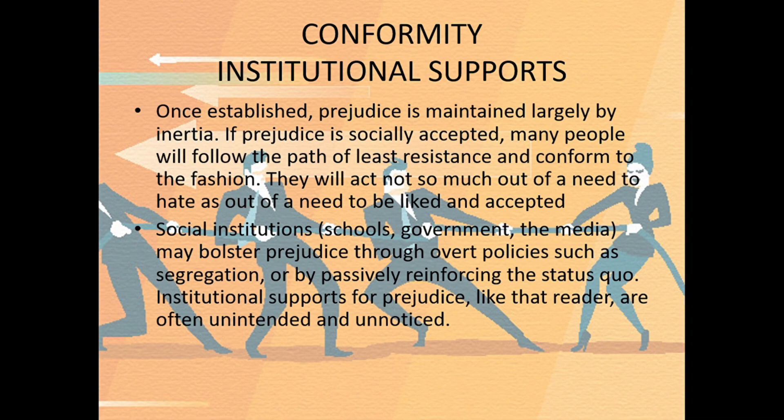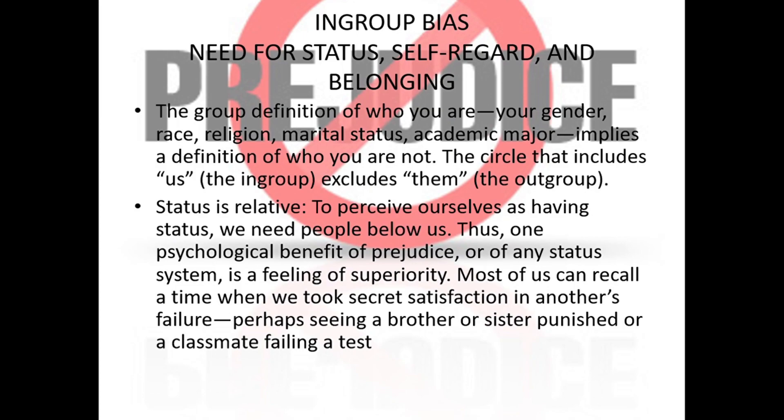Social institutions such as schools, government, and the media may bolster prejudice through overt policies such as segregation, or by passively reinforcing the status quo. Institutional supports for prejudice are often unintended and unnoticed.